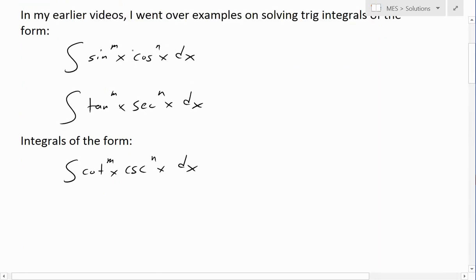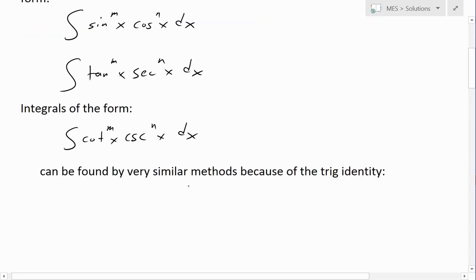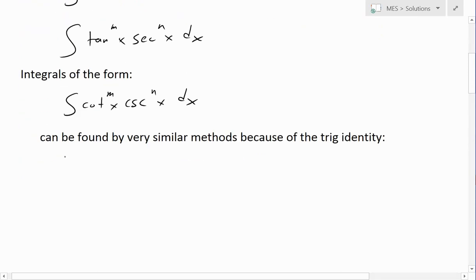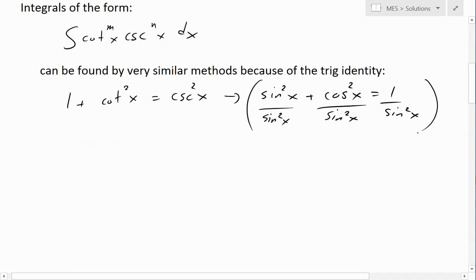Now you could use very similar methods to these because of this trig identity which is 1 plus cotangent squared of x equals to cosecant squared of x. This one comes from, if you take the main trig identity, sine squared plus cos squared equals to 1. If you were to just divide both sides by sine squared of x, then basically you will get 1 plus cotangent squared of x equals to cosecant squared of x.